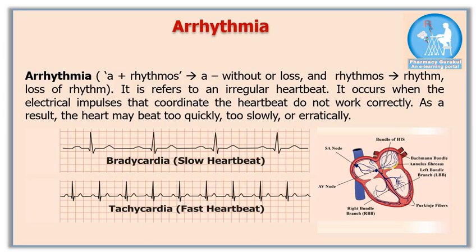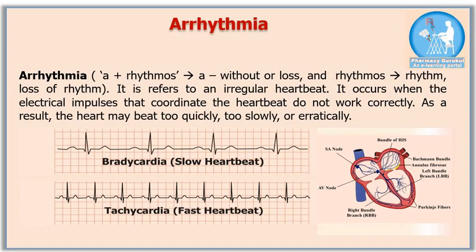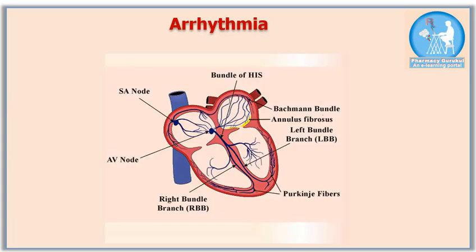Whenever there is an irregularity in the heart beating pattern, that is referred to as arrhythmia — whether your heart beats too slow or too fast, both conditions are referred to as arrhythmia. Basically, arrhythmia is of two types: bradycardia and tachycardia. In bradycardia your heart is beating too slow, less than 60 beats per minute, whereas in tachycardia your heart is beating too fast, more than 100 beats per minute.